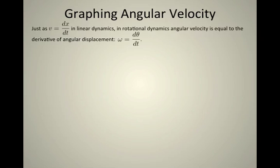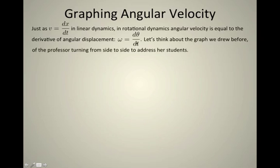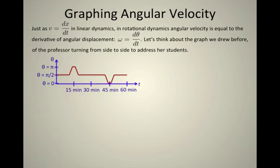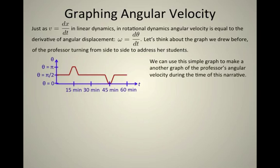Remember that velocity represents the change in position in the linear case, so velocity equals Δx/Δt. By the same token, we expect the angular velocity, ω, to represent a change in angle, so it's going to be Δθ/Δt, or for those of you comfortable with calculus, this is dθ/dt. So let's think about the graph that we drew before when we have the professor addressing students. The graph of θ versus t looked like this. There are a couple locations where the θ is changing. So we're going to use this graph to then make a graph of angular velocity corresponding to the same time of the narrative.